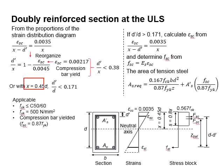Assuming x is equal to 0.45d, these equations can be represented by a ratio of d prime per d, which is less than 0.171. This gives us a more straightforward method for us to check whether the steel bar has yielded in compression. So, as long as the d prime per d is less than 0.171,